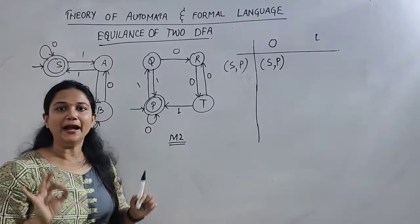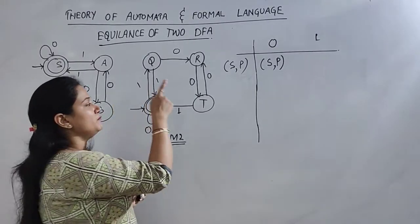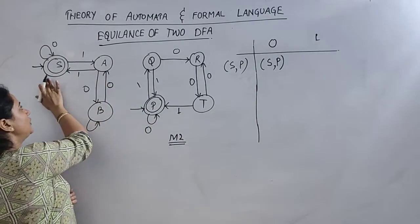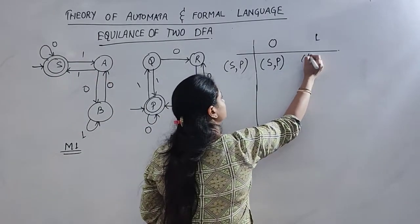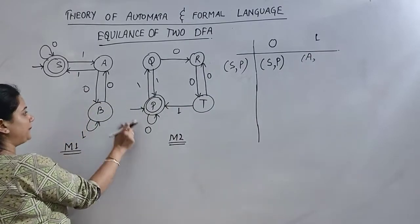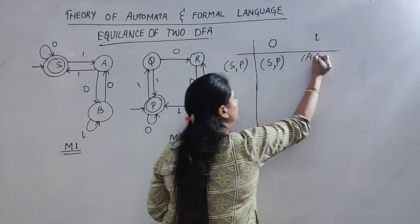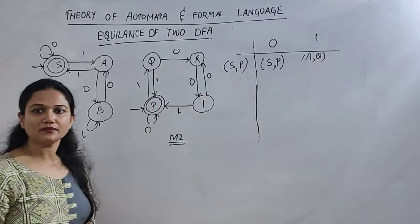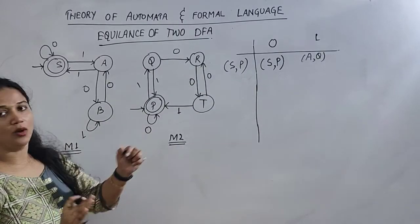Now we will check for one input. S on one input is A, P on one input is Q, so this is my pair. So, it becomes A, Q.